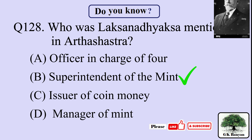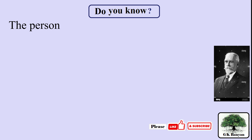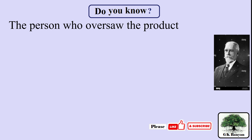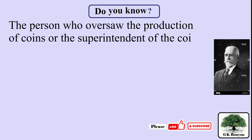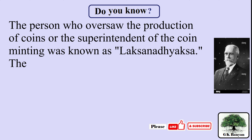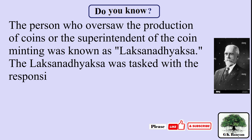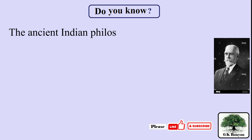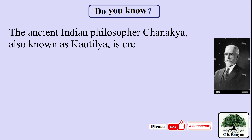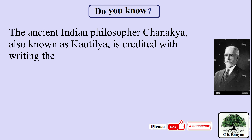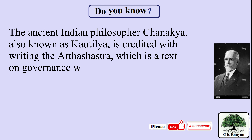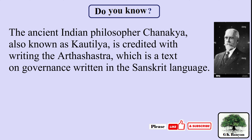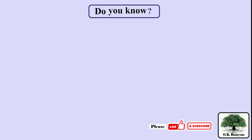The right answer is B. Superintendent of the Mint. The person who oversaw the production of coins, or the superintendent of coin minting, was known as Lakshnadej. The Lakshnadej was tasked with the responsibility of minting coins on the king's behalf. The ancient Indian philosopher Chanakya, also known as Kautilya, is credited with writing the Arthashastra, a text on governance written in the Sanskrit language.